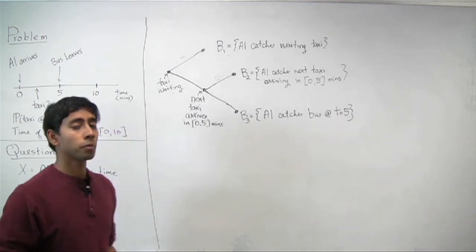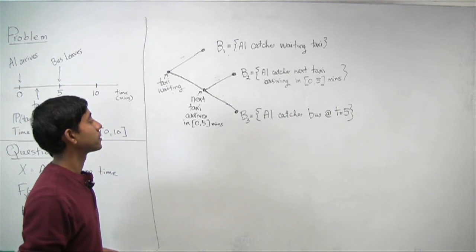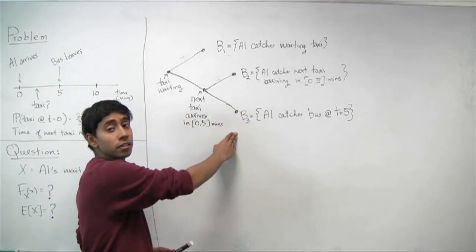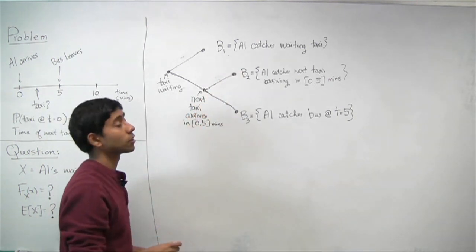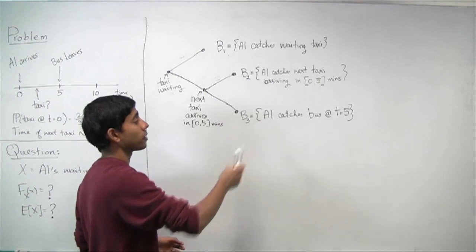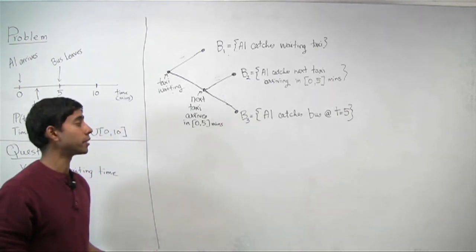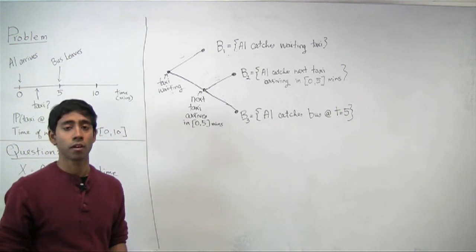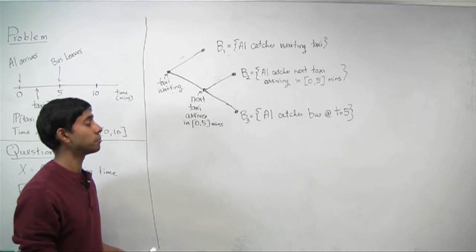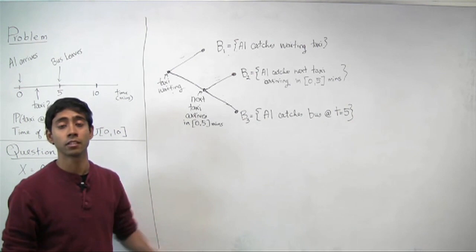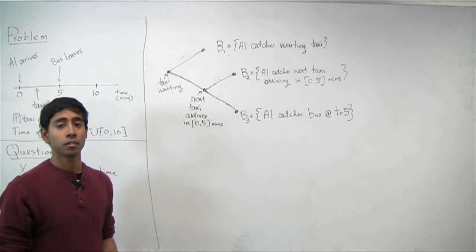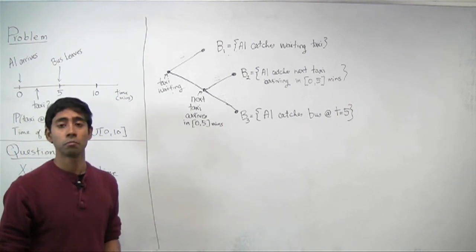One convenient way to view this problem is with a tree structure. The events of interest are B1, B2, and B3. B1 is Al catches the waiting taxi, B2 is Al catches the next taxi which arrives between zero and five minutes, and B3 is Al catches the bus at time t equals five. Notice that these three events are disjoint and cover the entire set of outcomes, so B1, B2, and B3 form a partition.